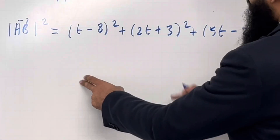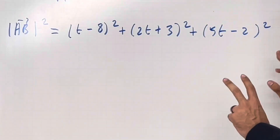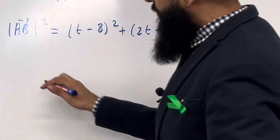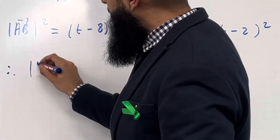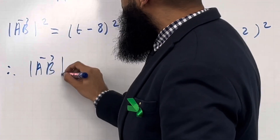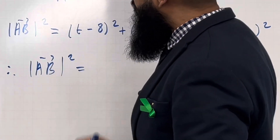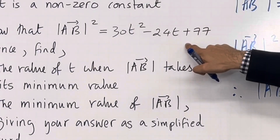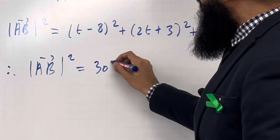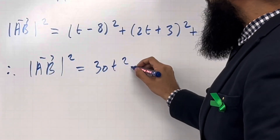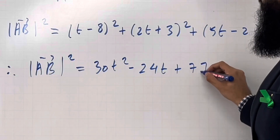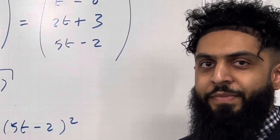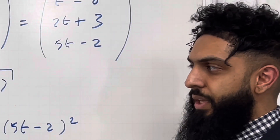I can open up these brackets, expand and simplify. After simplifying, I get therefore the magnitude of AB squared is equal precisely to this quadratic: 30t squared minus 24t plus 77, as required. Let's move on to the next part of the question.